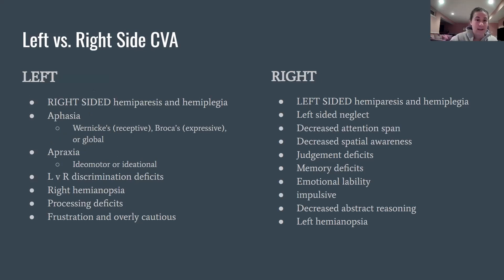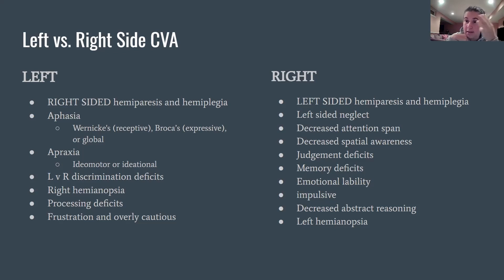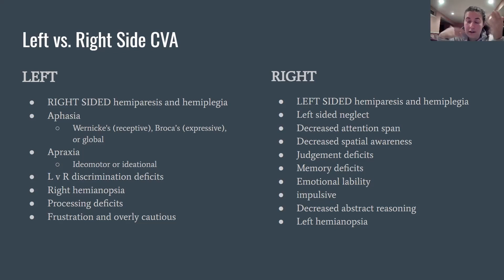Left CVAs versus right-sided CVAs: if the infarct is on the left side of the brain, the right side of the body will have weakness and hemiplegia. Also in the left side of the brain are Broca's area and Wernicke's area. Broca's is expressive aphasia — difficulty talking — located in the frontal lobe. A memory tip: 'boca' means mouth in Spanish, and Broca is towards the front of the alphabet. Wernicke's area is in the temporal lobe and causes receptive aphasia — they may be speaking but it's gibberish, and they have difficulty understanding speech or written language.